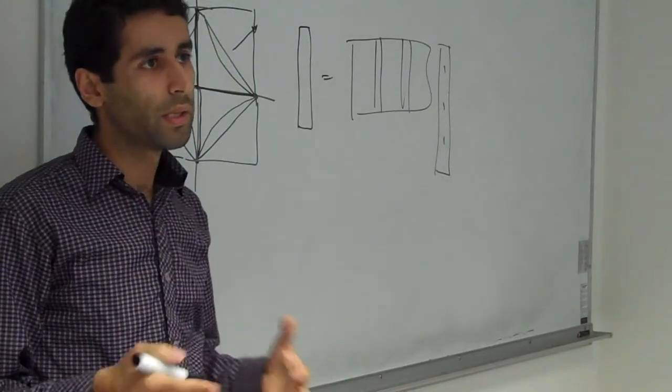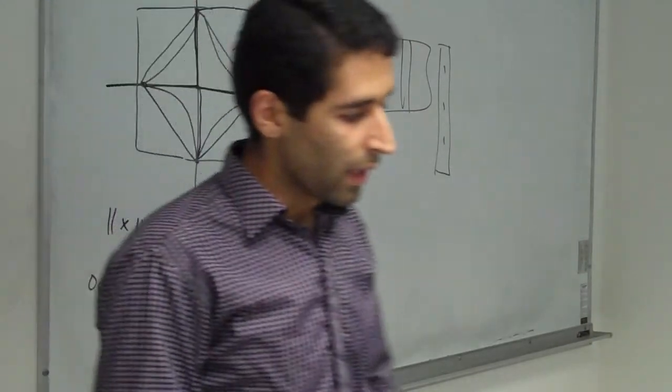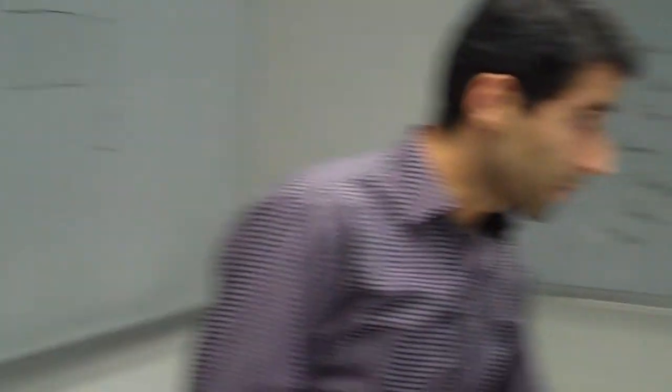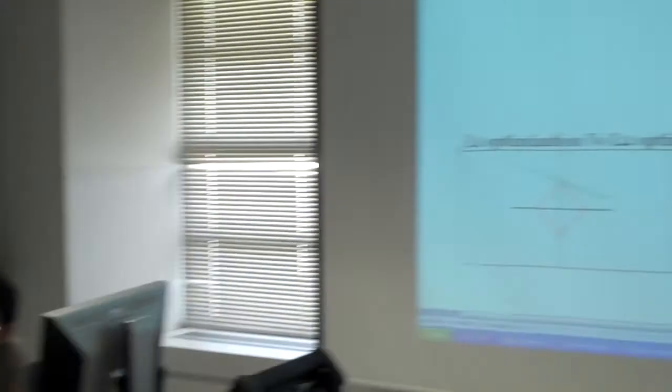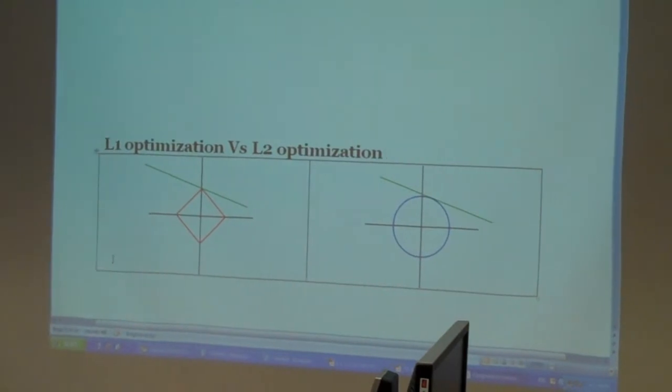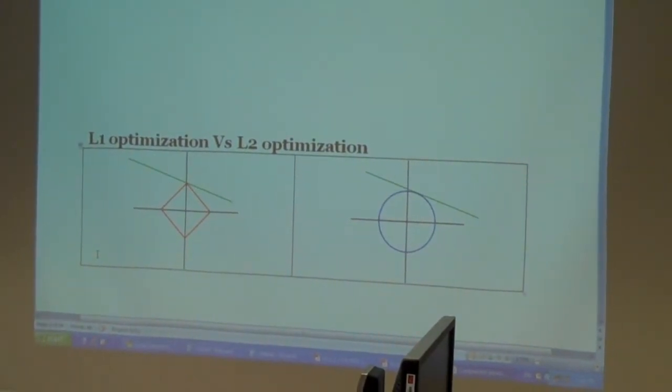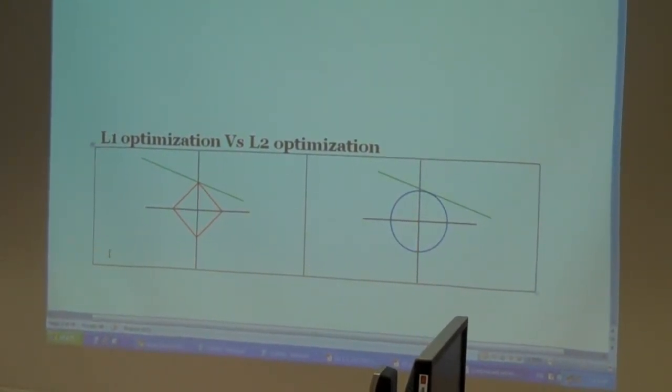This means, if we have a green line as our data and the shape of the square is L1 and the circle is L2.